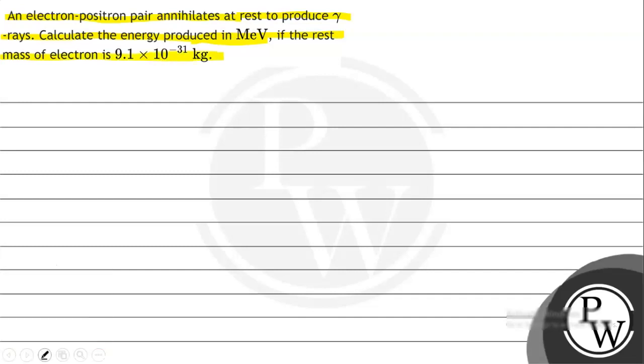So we need to understand first of all the meaning of annihilates - to destroy completely. Basically we have an electron which has a negative charge and a positron which is an antiparticle which has a positive charge like that of electron, but masses of both are the same.